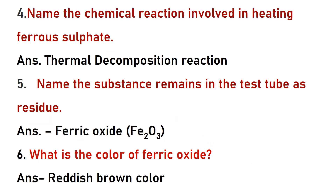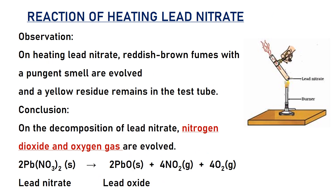Fourth question: name the chemical reaction involved in heating ferrous sulphate — thermal decomposition reaction. Fifth question: name the substance remaining as residue in the test tube — ferric oxide; its color is reddish-brown.